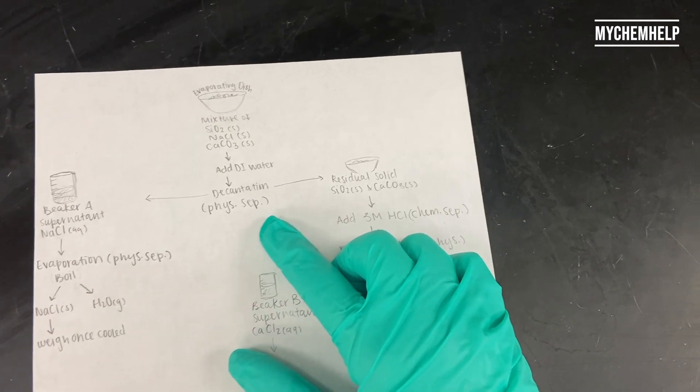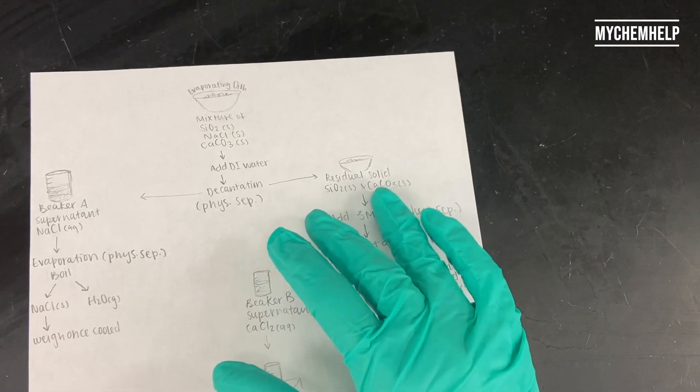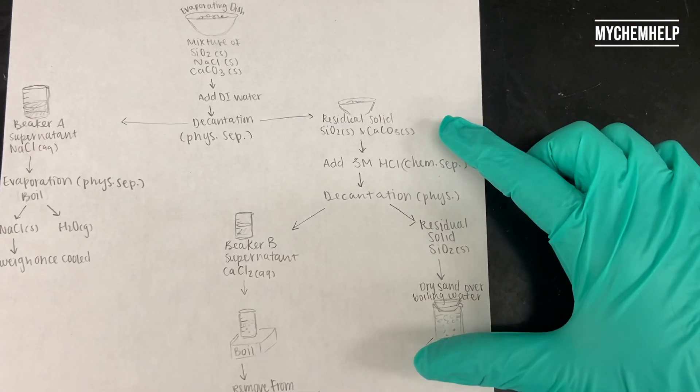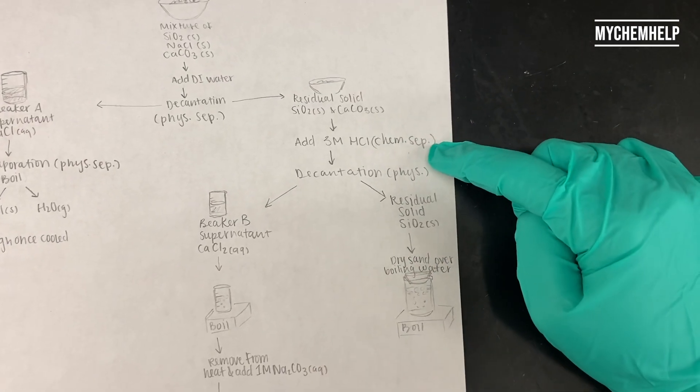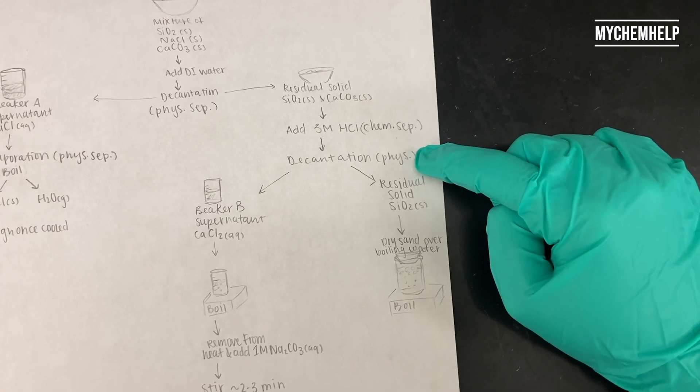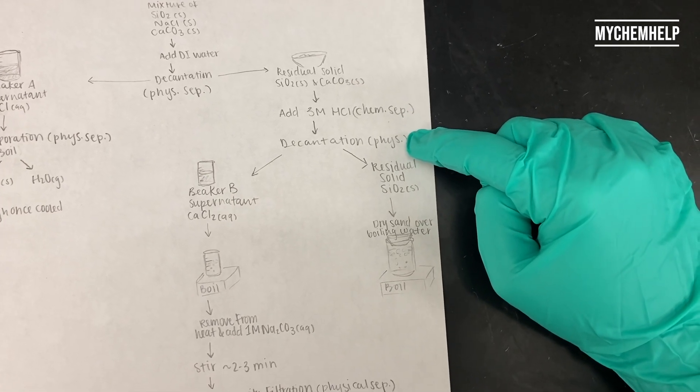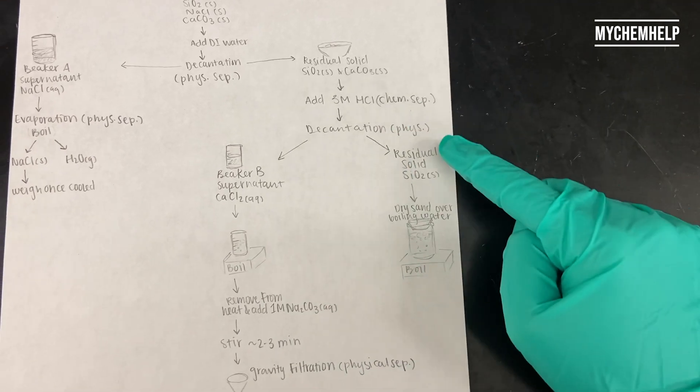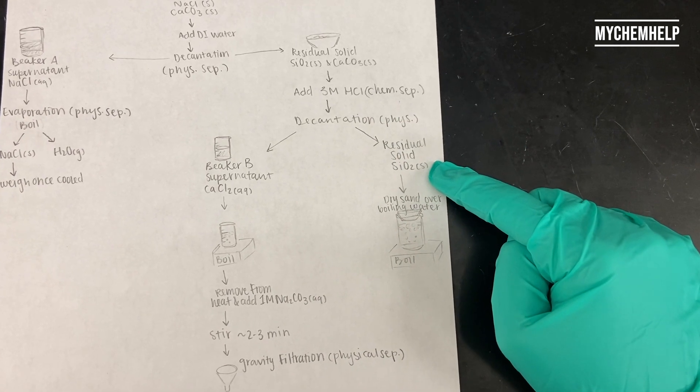So back to the decantation, we have a residual solid of silicon dioxide and calcium carbonate. So in order to separate these two, we're going to add three molar hydrochloric acid, and then do another decantation, and our supernatant is going into beaker B, and the residual solid is just the silicon dioxide.